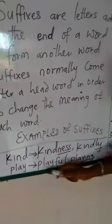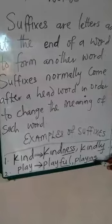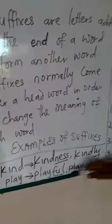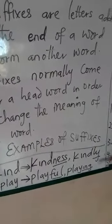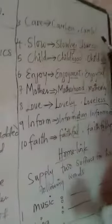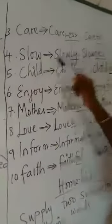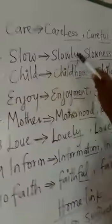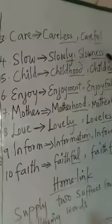Next, 'playing' and 'playful' — the underlined letters are examples of suffixes. Then 'care' gives us 'careless' and 'careful'. Next, 'slow' gives us 'slowly' and 'slowness'.